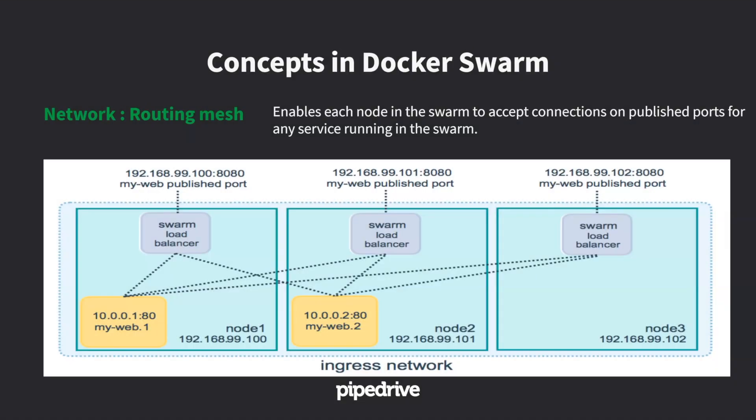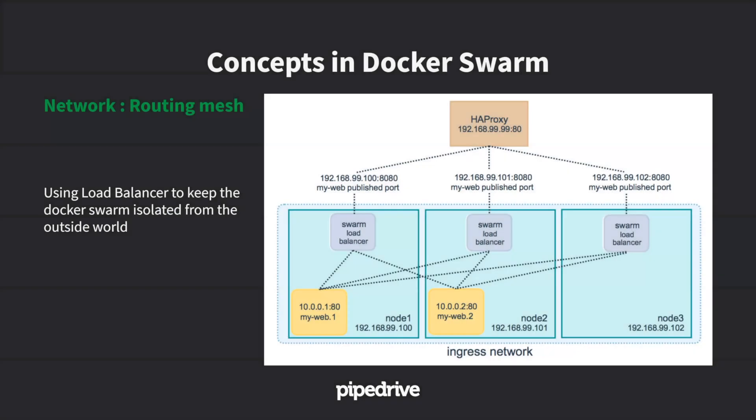Then we have networks. The routing mesh means you don't need to know the IP of the specific host where a container is running — you just need any one IP in the cluster and Swarm routes the request for you. If you want to expose a cluster publicly to the internet, you just need to reach one of the IPs. If you use a load balancer, just configure it to route to any IP of the cluster.